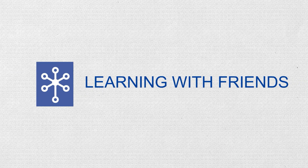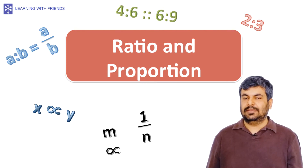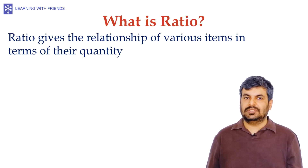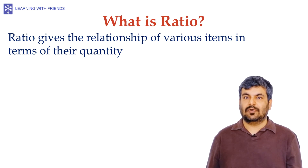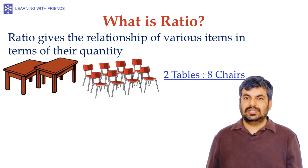Hello everyone, welcome to Learning with Friends. Today we are going to discuss ratio and proportion. A ratio is a relationship of various items in terms of their quantity. For example, suppose there is a room with two tables and eight chairs.